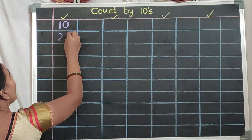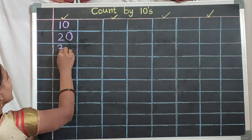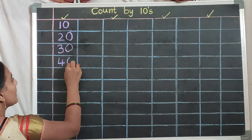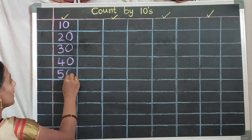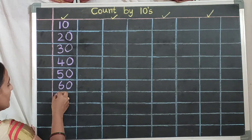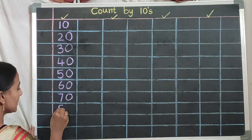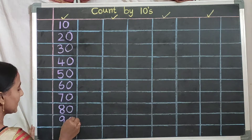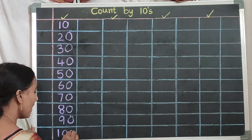Two, zero, twenty. Three, zero, thirty. Four, zero, forty. Five, zero, fifty. Six, zero, sixty. Seven, zero, seventy. Eight, zero, eighty. Nine, zero, ninety. One, zero, zero — one hundred.